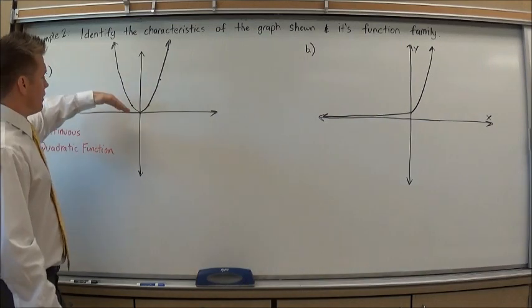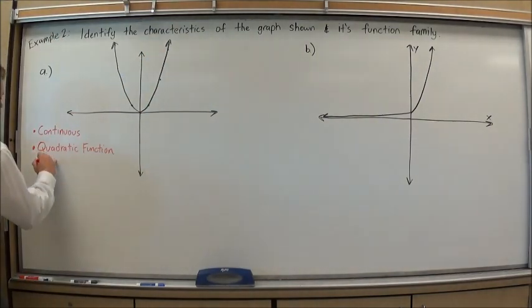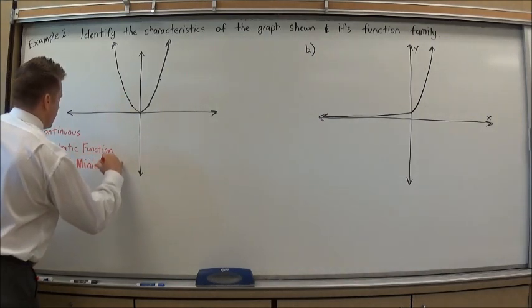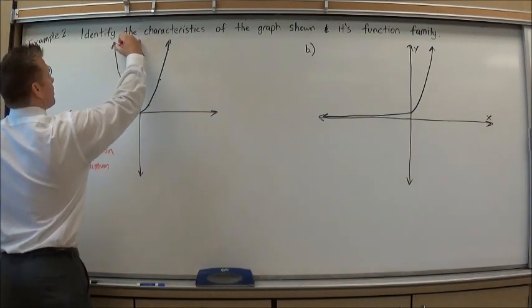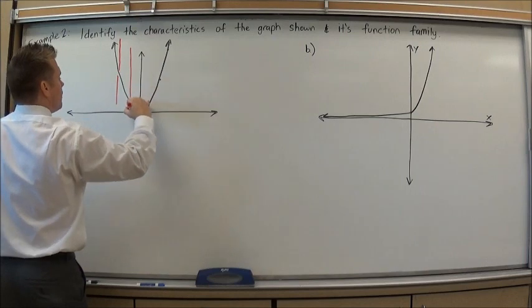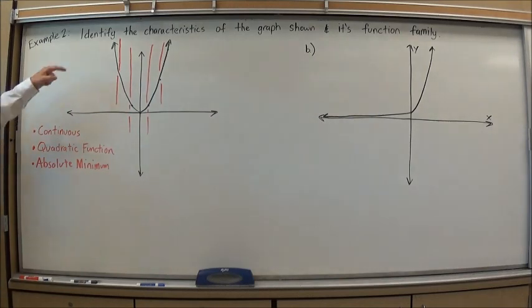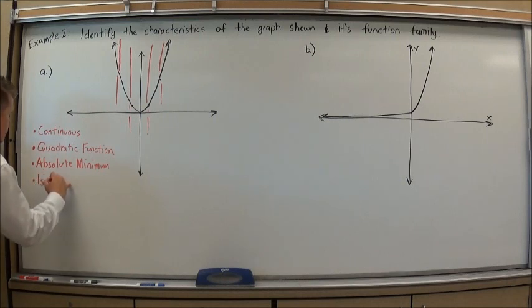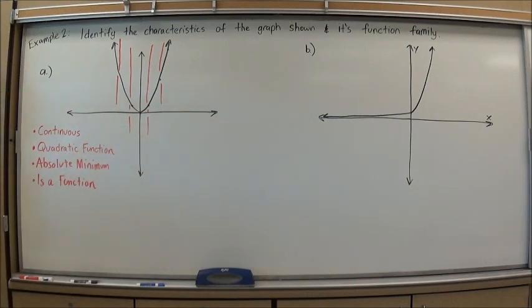And if I look, it does have a value that is the lowest it ever goes. It has this absolute minimum. So I want to include that in there as well when describing it. So now I've given a good description of what I see in the graph. It's a continuous quadratic function with an absolute minimum. And while we're here, we might as well review some of the other concepts from earlier in the chapter like whether or not something's a function. If I do the vertical line test to this, I can see it's only ever going to go through once, once, once, once, once. So it's also a function.